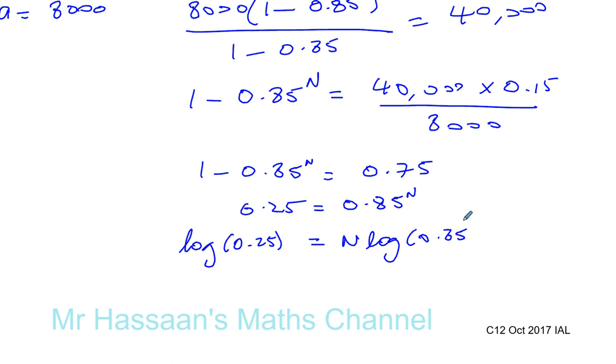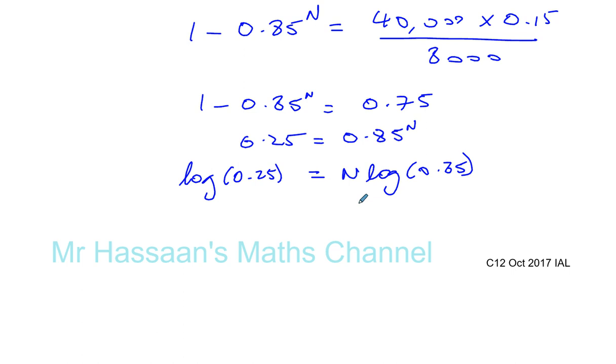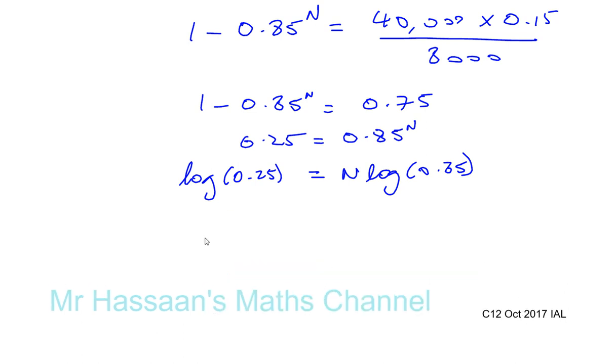Remember, you don't have to write the base when doing log to the base 10. So we can say that log of 0.25 divided by log of 0.85 equals N. Let's calculate that.